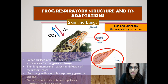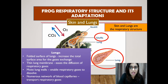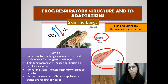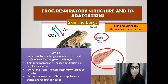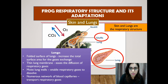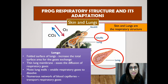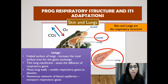Now let's look into the frog's lungs. The frog's lungs are a pair of air sac organs connected to its mouth through an opening called the glottis, that can be opened and closed. The surface of the lungs is folded to increase the total surface area for gas exchange. It has a thin lung membrane which eases the diffusion of respiratory gases. The lungs are also moist to enable respiratory gases to dissolve, and contain numerous networks of blood capillaries to transport the respiratory gases.